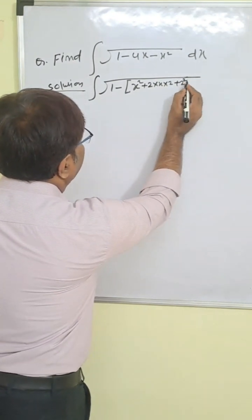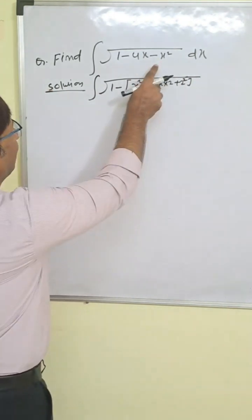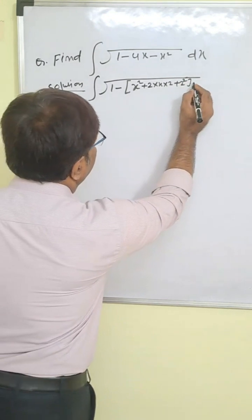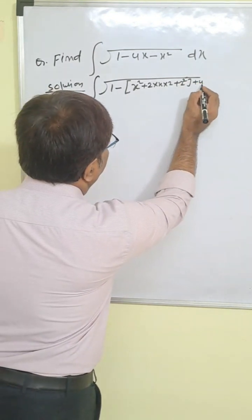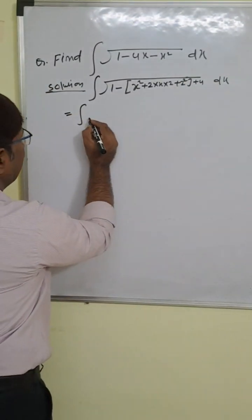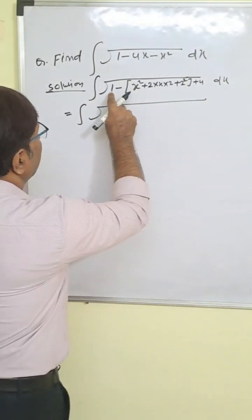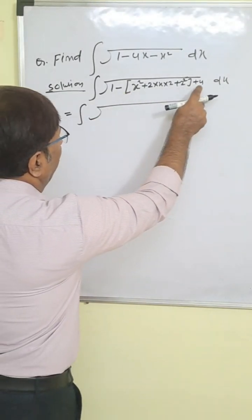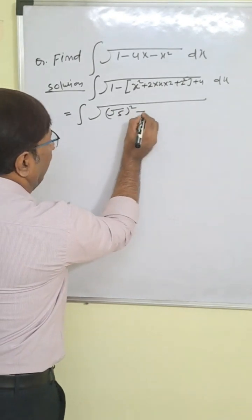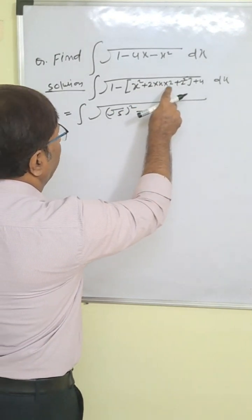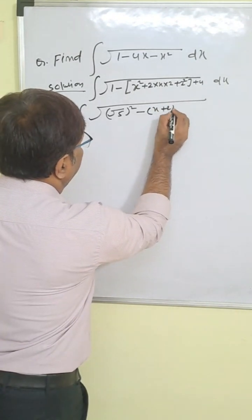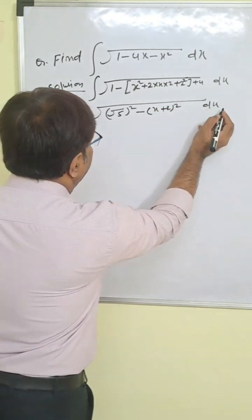So b square is 4. Now you can see x square and minus 4x. So we will add plus 4, giving us 1 plus 4 equals 5. So we can write integration of root under 5 minus x square, and then x square plus 2ab plus b square gives us x plus 2 whole square dx.